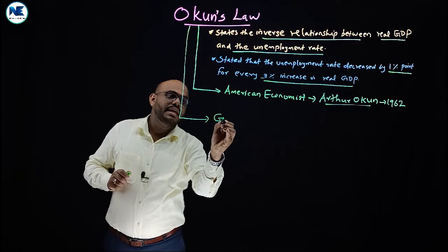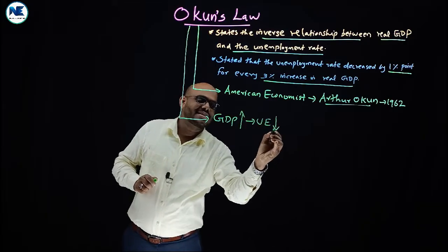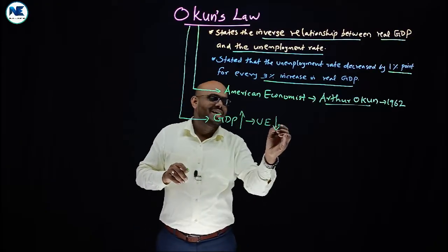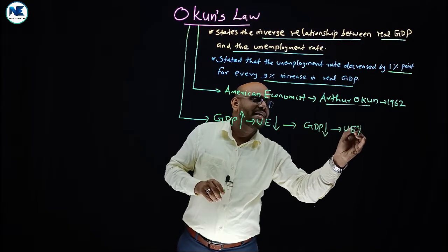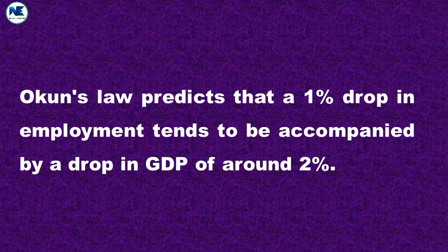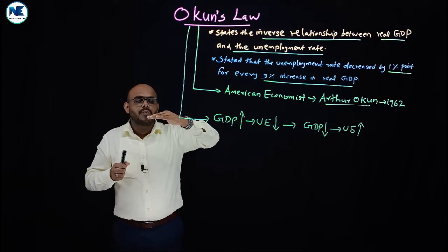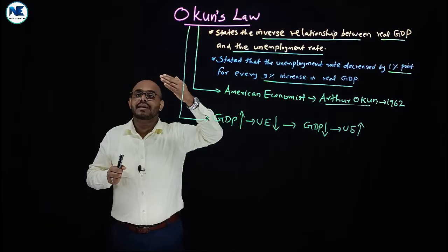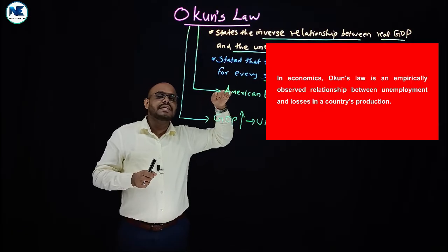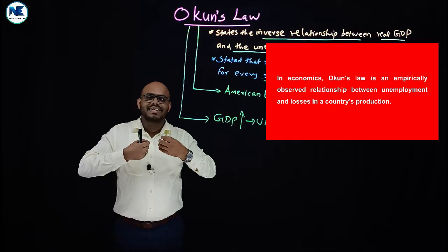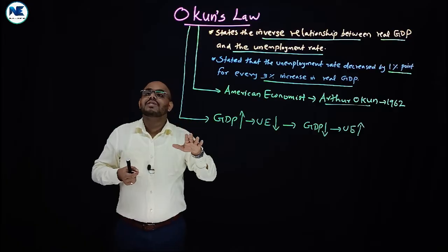When real GDP rises, the unemployment rate will decrease, and vice versa — when real GDP decreases, unemployment will increase. To simplify: one percentage increase in the unemployment rate results in two to three percentage decline in the GDP of the country.